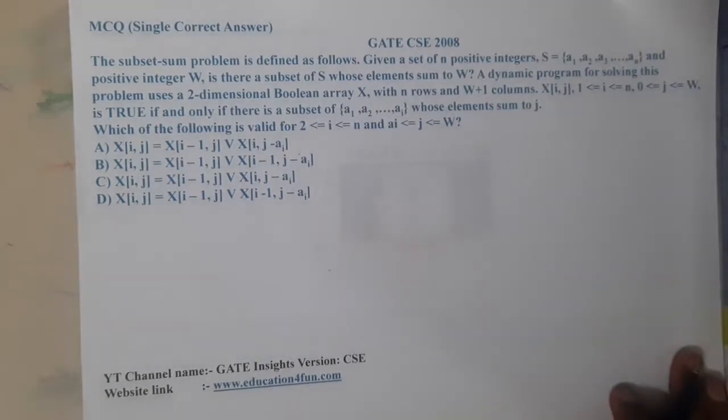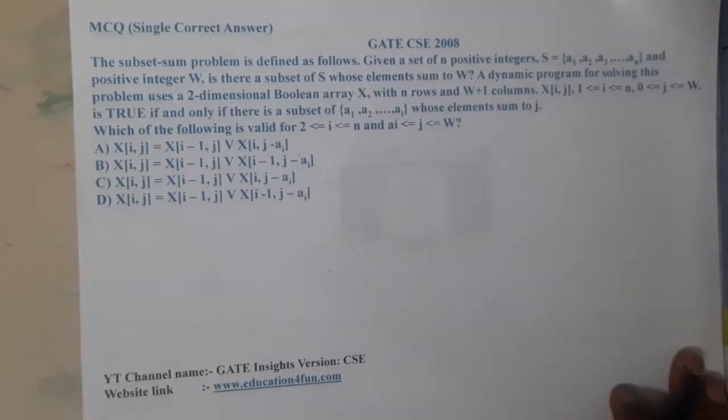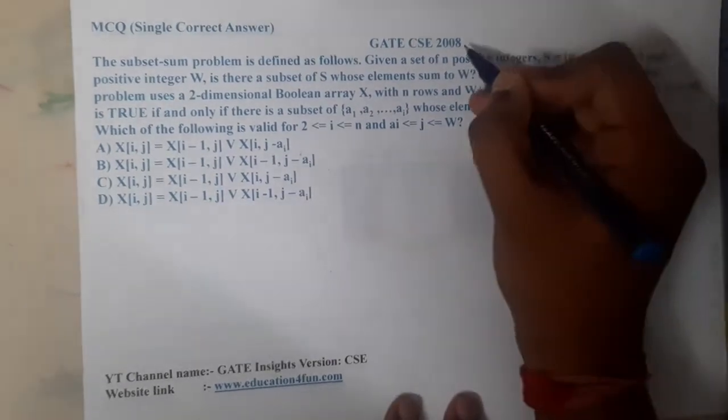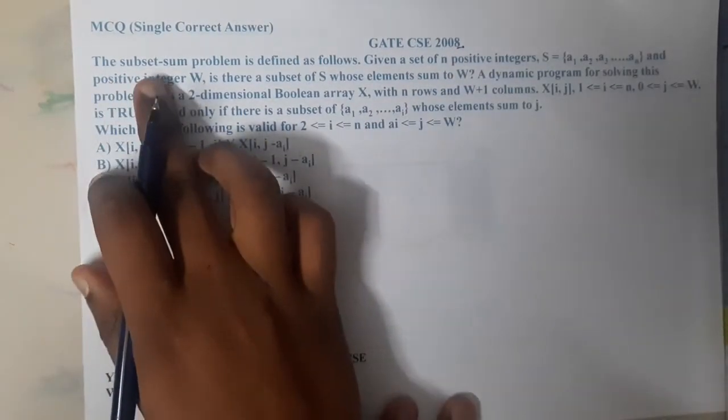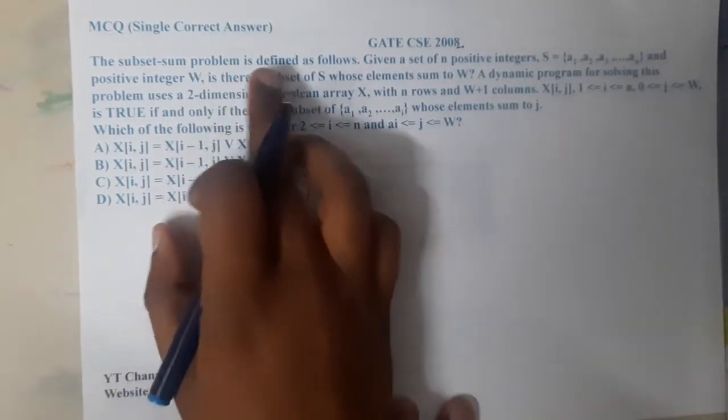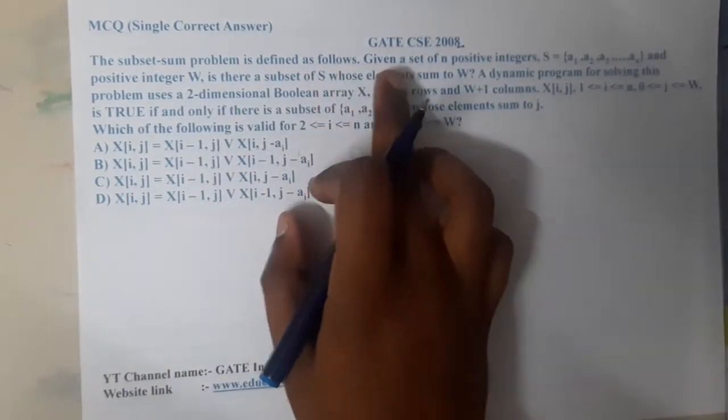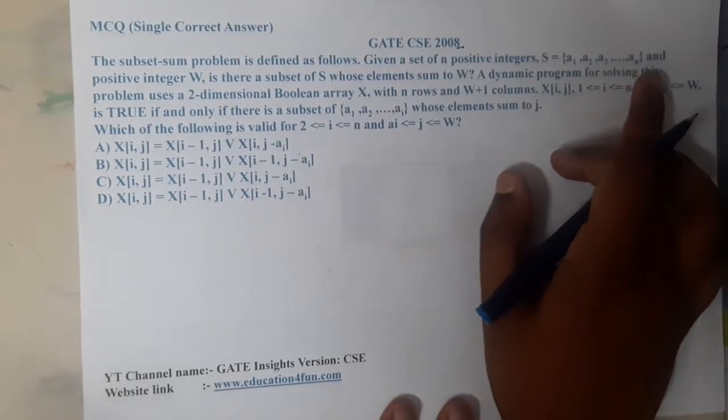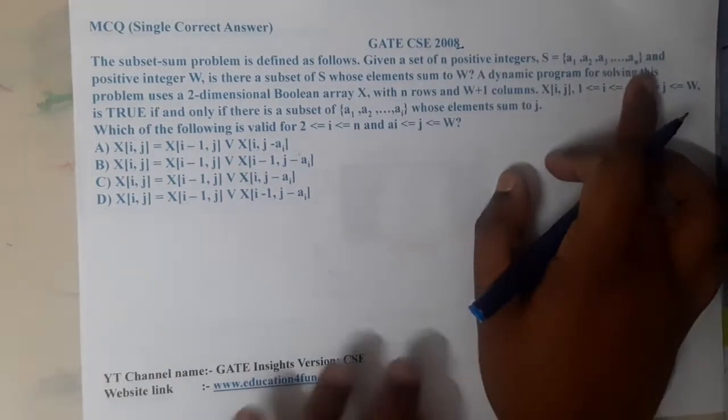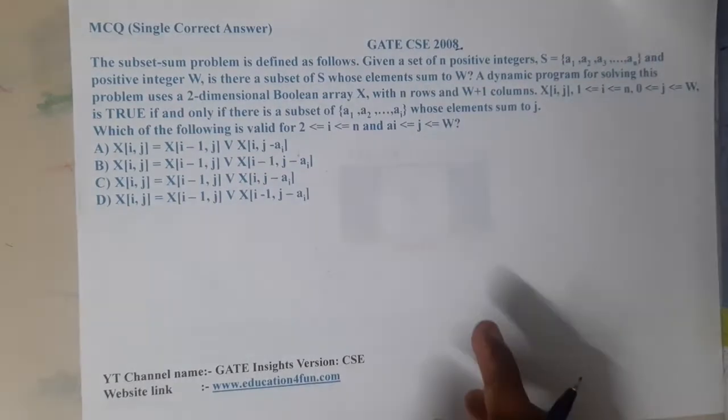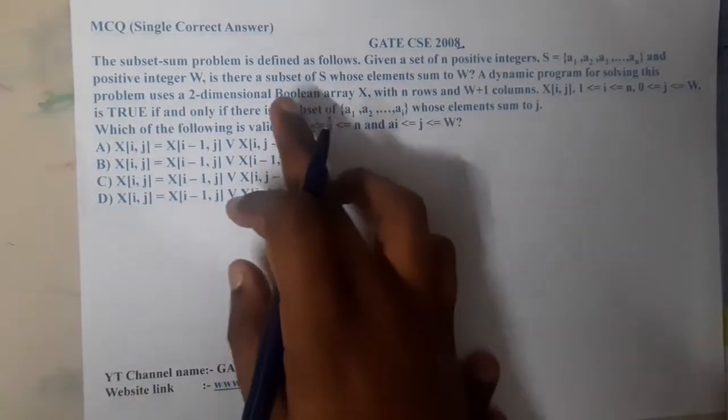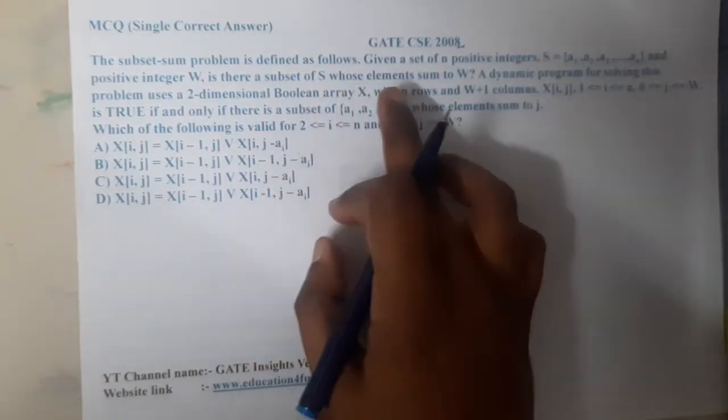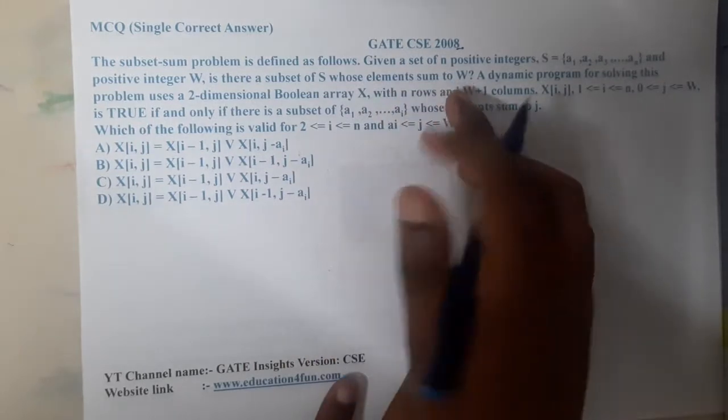Hello guys, we are back with our next lecture. In this lecture let us go through the next question. This question belongs to GATE CSE 2008. The subset sum problem is defined as follows: given a set of n positive integers a1, a2, up to an, and positive integer w, is there a subset of S whose elements sum is w?